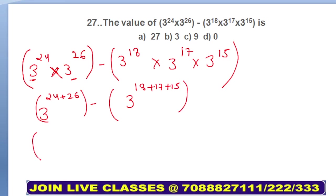What will we get? This will be 3^50, and this will be 3 to the power of 38 plus 7, 15, 20, so this will be 3^50. This will be 3^50. Plus minus makes minus, so your answer is option number D.